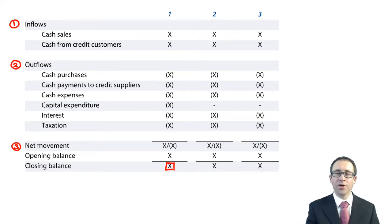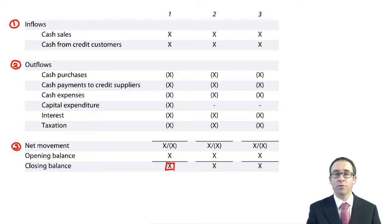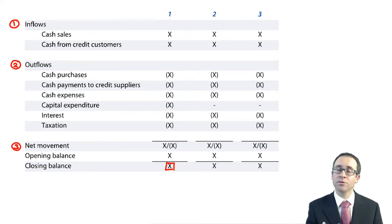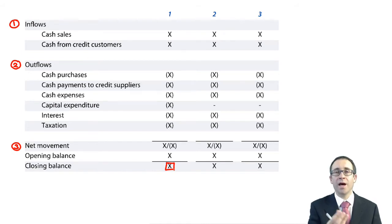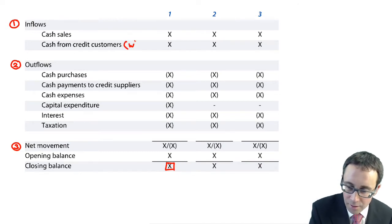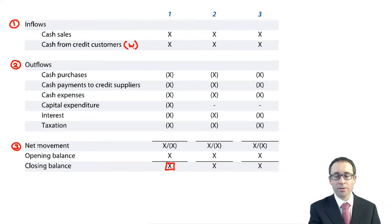The inflows — usually the easier ones to calculate — come from cash sales and cash from your credit customers. If you make a sale within the month, some of it will be for cash and some of it will be for credit. The key issue is those credit sales: how much do you receive this month and how much do you receive next month? We'll need to do a little bit of a working, as we'll see in a moment.